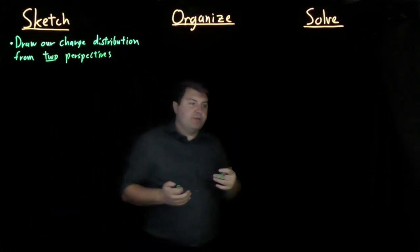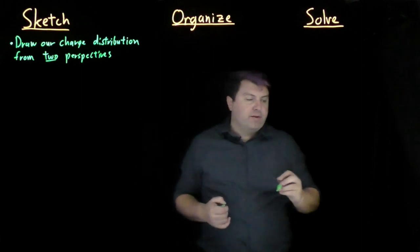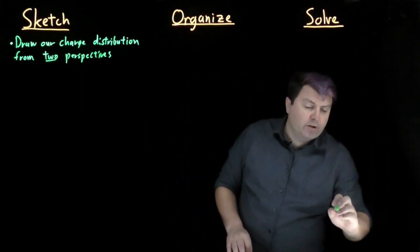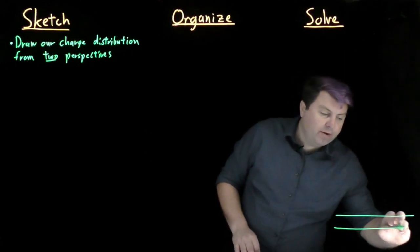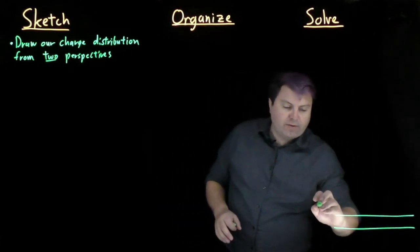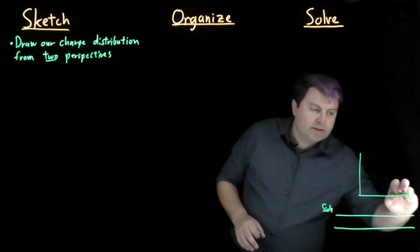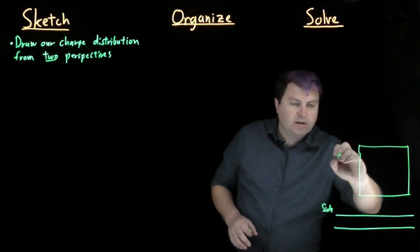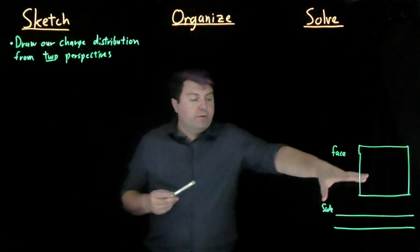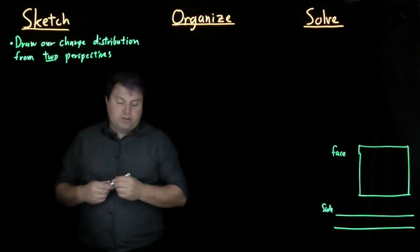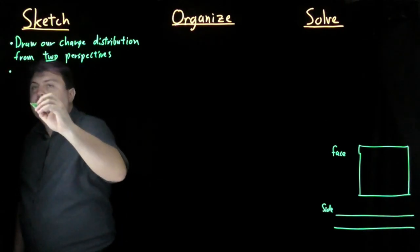If it's a sphere, it doesn't really need two perspectives, but for another surface, for another shape, it's very important. So we're going to look at an infinite plane. For our infinite plane or infinite slab, it might look like this from the side, but then it's going to look like this from the face. We need both of these in order to understand what's going on.